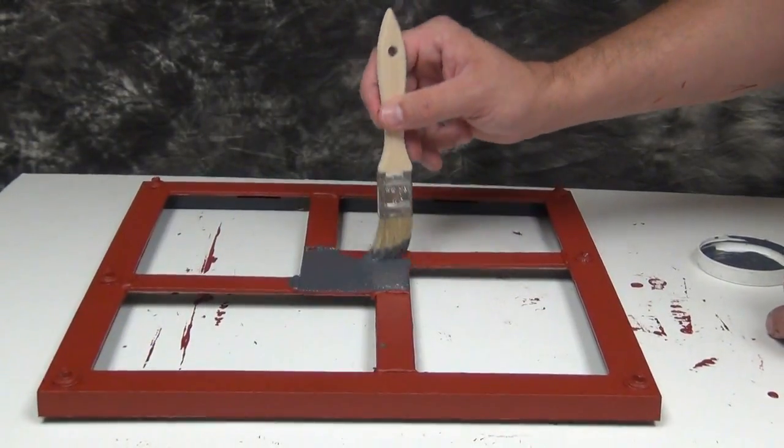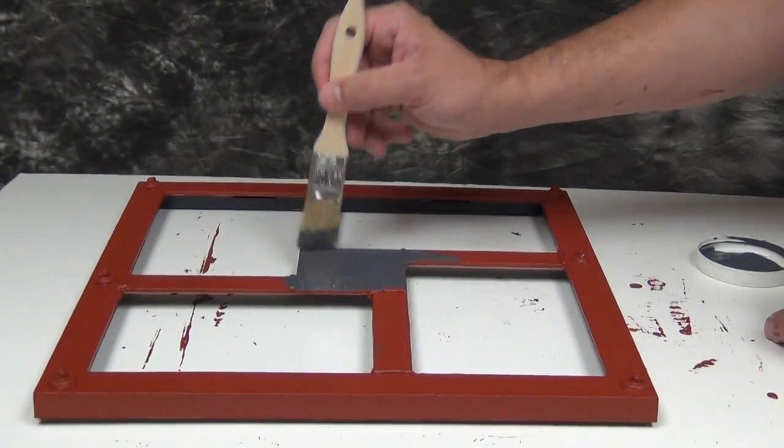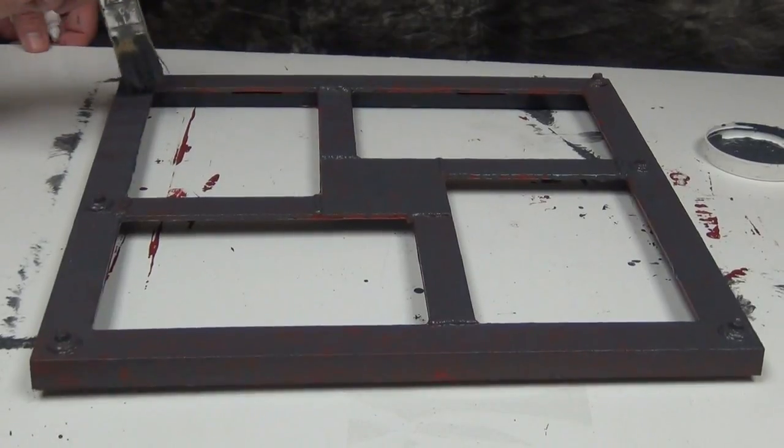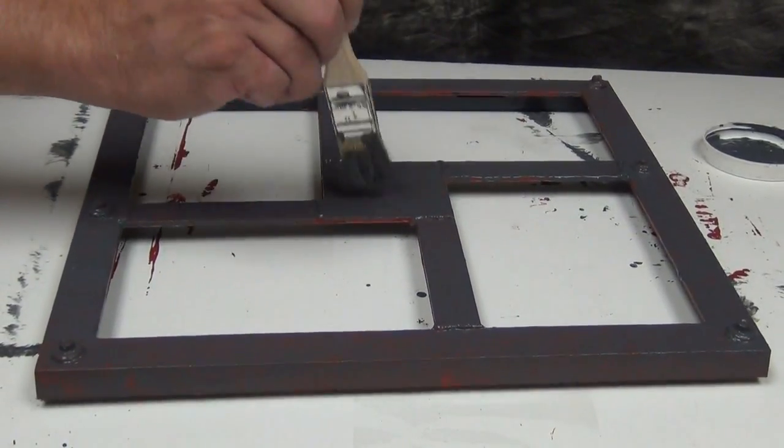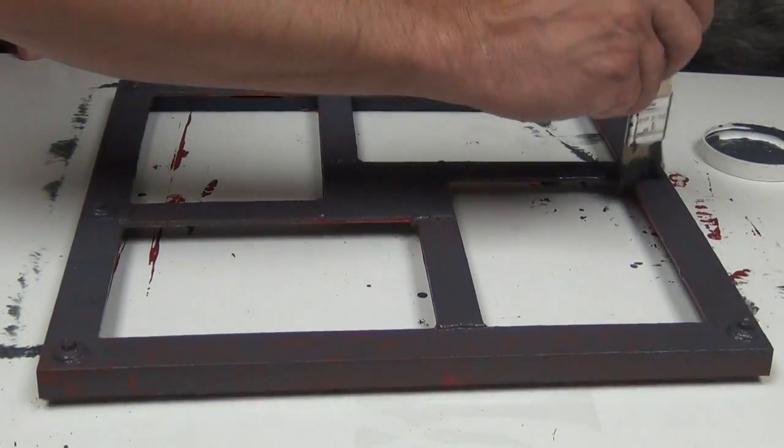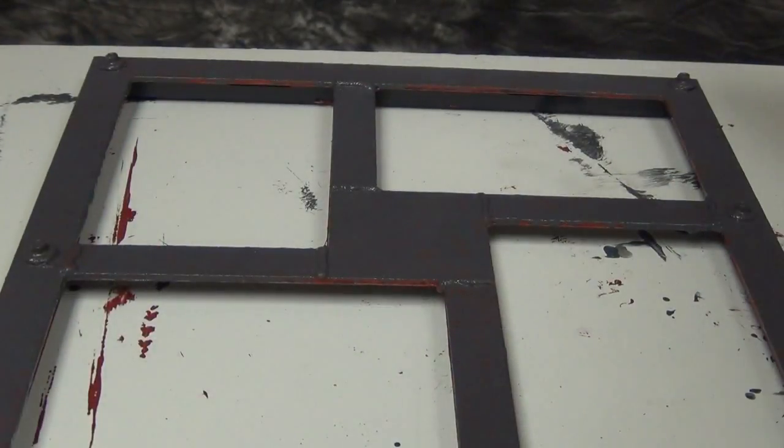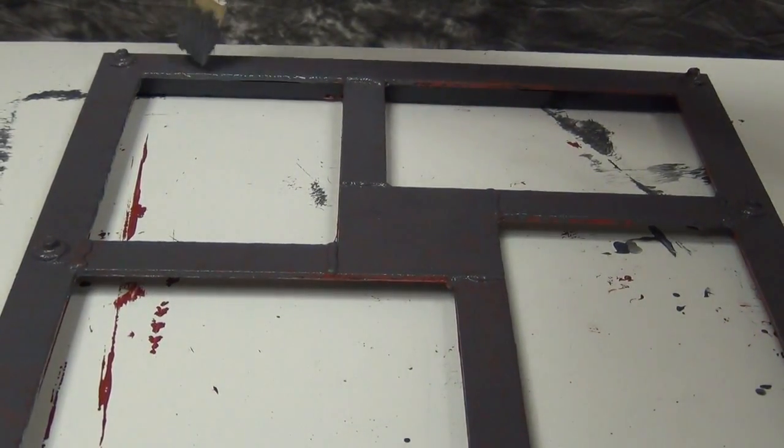This first coating will serve as a base coat, so you want to make sure you get total coverage. Once you oxidize the second coating, you don't want any bare plastic showing through, so make sure you get good even coverage with this first coat and allow that to completely dry before moving on to the second coat.